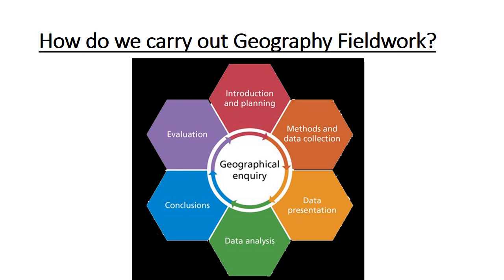Some of you might want to draw this or print it and stick it in. This is basically the six stages to a geographical inquiry or a piece of fieldwork. Firstly, you have to do the planning, which is usually done by your teacher at GCSE, but at A-level you have to do the planning yourself. Then you would go out and collect the data — usually this term we would be going to Dawlish Warren and doing things like counting waves, measuring pebbles, measuring the angle of the beach — but this year, because we're in the middle of partial lockdown, myself and Mr Gilbert will do that for you on Wednesday next week.